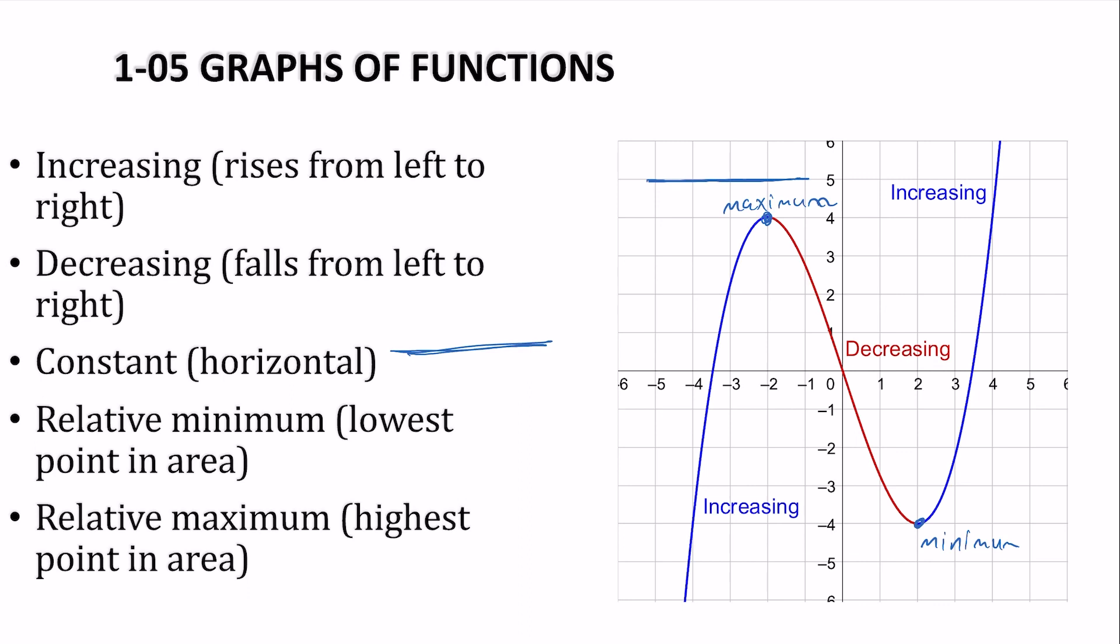So for each of these, this one is increasing from negative infinity to where does it stop? Now these are x-values. It stops at the x-value, negative 2. And then it starts going up again, starting at the x-value, 2, and continuing on. So it's the x-values. It's increasing. It's the blue ones there.